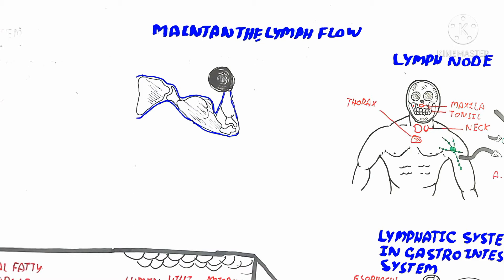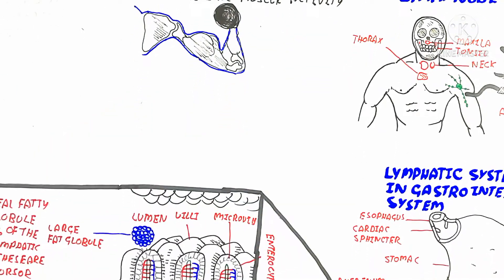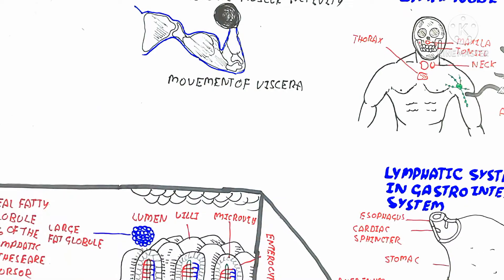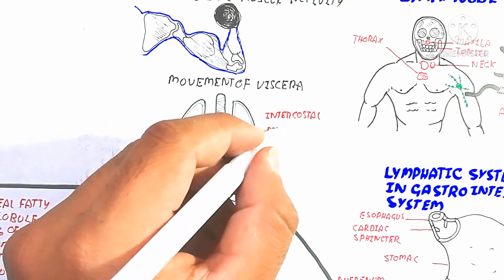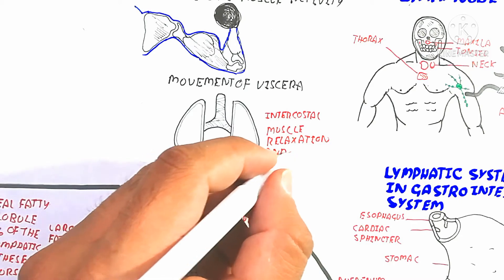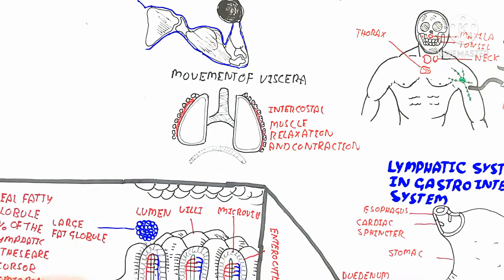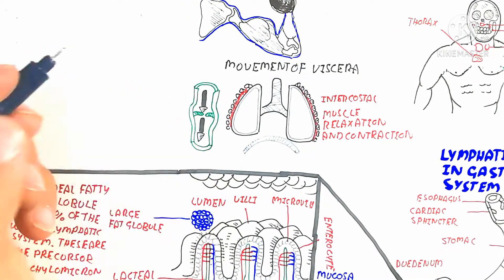Here we will discuss how lymph flow is maintained. First, skeletal muscle activity and movement of the viscera — for example, the lungs breathing in and out — contract the intercostal muscles. This intercostal muscle relaxation and contraction opens and closes the valves of the lymph vessel. The valves in the lymph vessel wall prevent backflow of lymph. The diaphragm's visceral movement also allows lymph movement toward the subclavian vein and thoracic lymph duct.